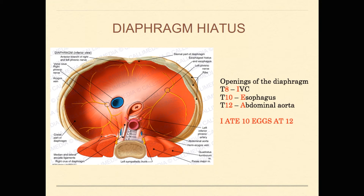So 'I ate 10 eggs at noon': I is for inferior vena cava, 10 eggs at noon. The inferior vena cava exits through the diaphragm at the level of T8. The esophagus passes through the diaphragm at T10, and the abdominal aorta passes at T12. That's where these three pass through the diaphragm.